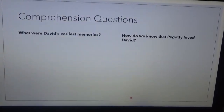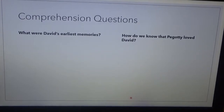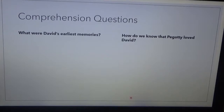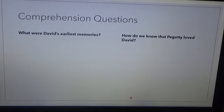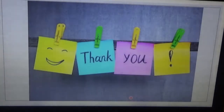I'm leaving you with two comprehension questions. Write your answers in your copy book and send them to me in our Discord group or on WhatsApp. Question 1: What were David's earliest memories? Question 2: How do we know that Peggotty loved David? I'll be waiting for your answers before we proceed to Chapter 3.